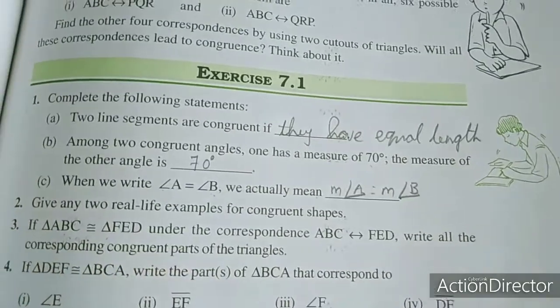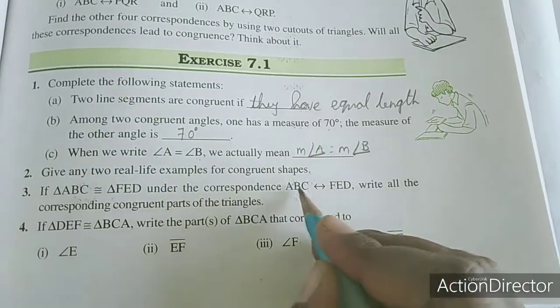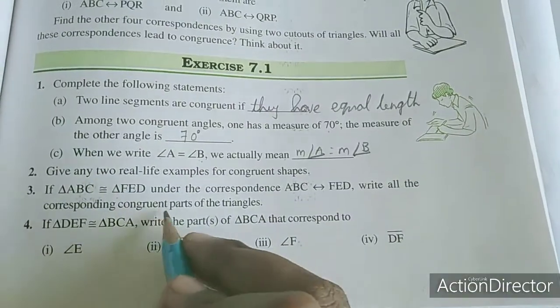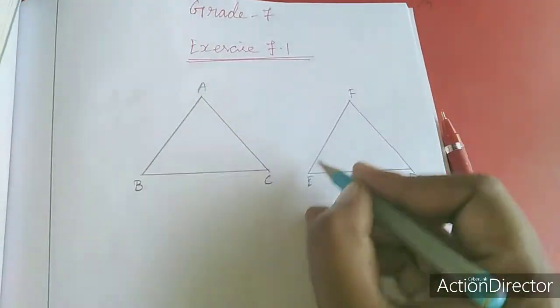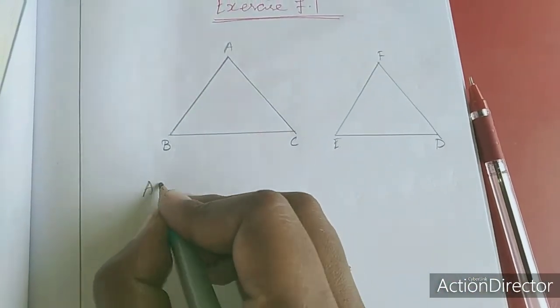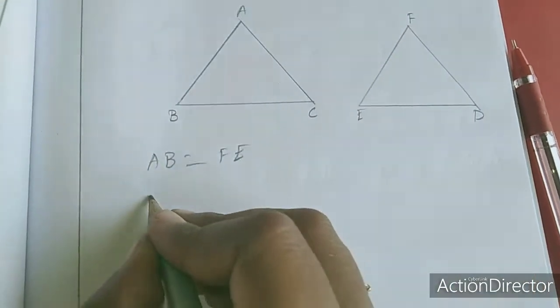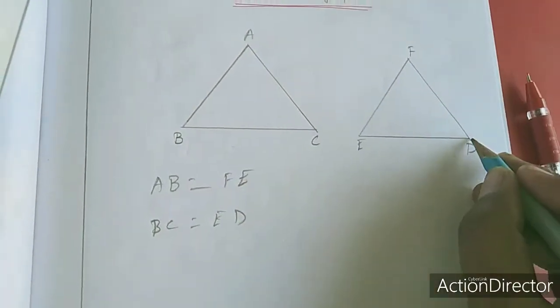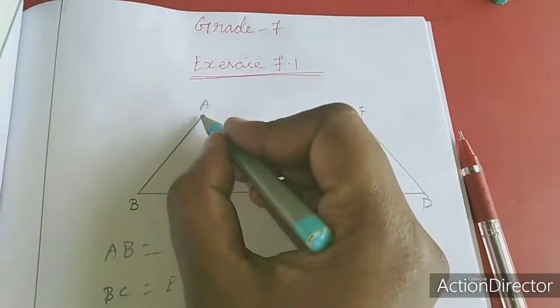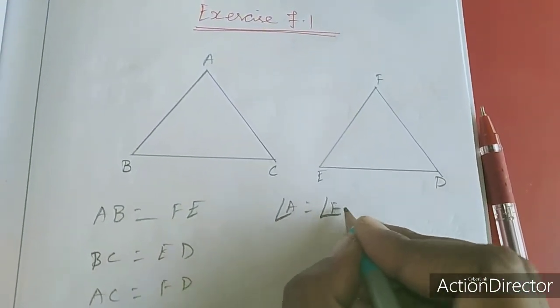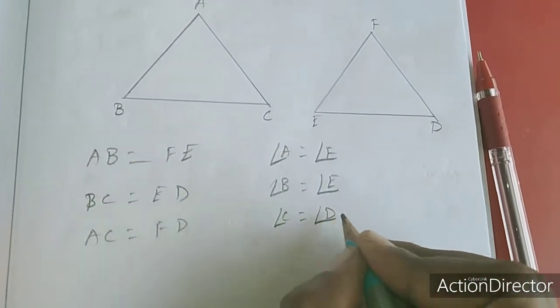Problem 4: If triangle ABC is congruent to triangle FED, write all the corresponding congruent parts of the triangles. The sides are: AB equals FE, BC equals ED, AC equals FD. The angles are: angle A equals angle F, angle B equals angle E, angle C equals angle D.